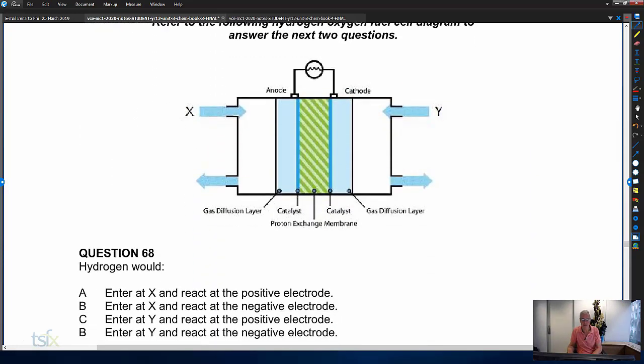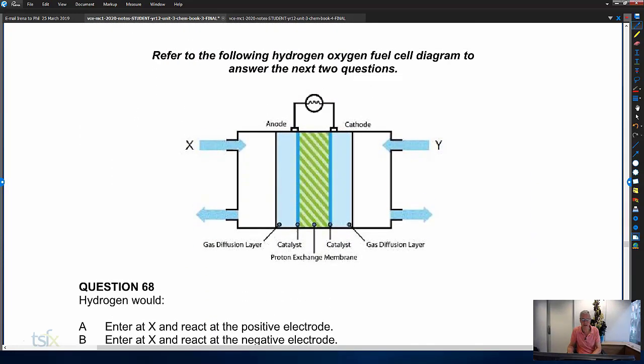All right, I'll skip through some of the easier questions, but just make sure we can look at a diagram like that. And without even looking at the question, you've got to be given some information. Either you're told what the reactants and products are, or you're told anode and cathode, or you're told negative, positive, or you're told direction of electron flow. From that, you can deduce everything.